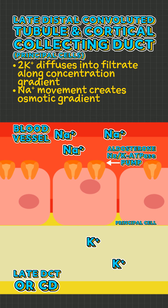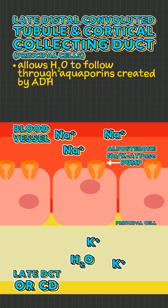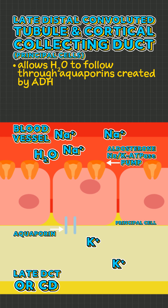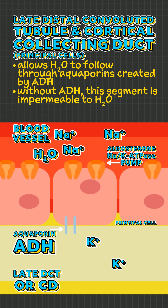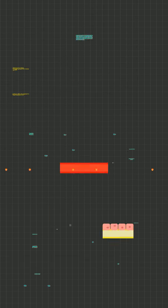The movement of sodium also creates an osmotic gradient that allows water to follow through aquaporins, or water channels, created by the presence of antidiuretic hormone, or ADH. Without ADH, this segment is impermeable to water, and those are the facts!